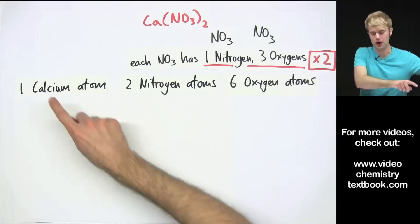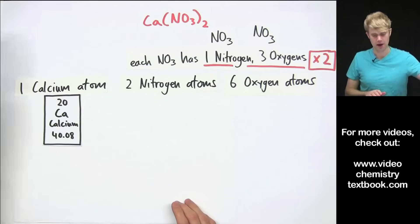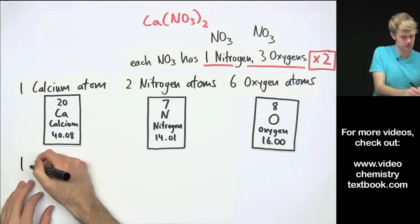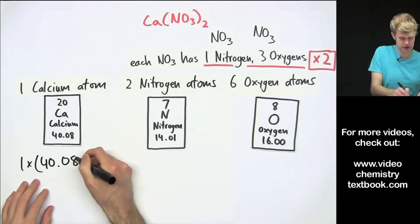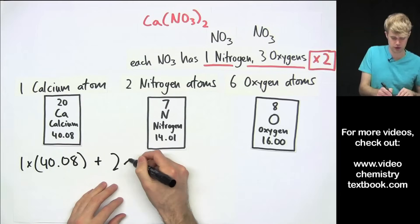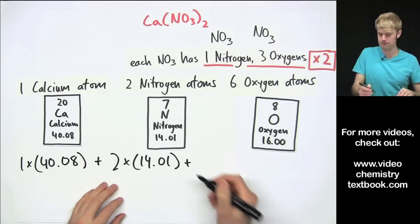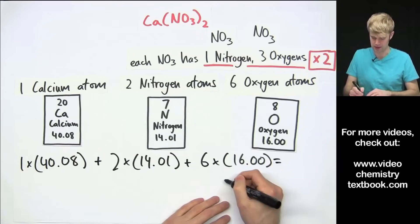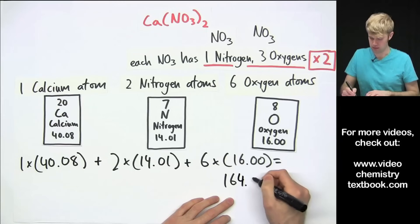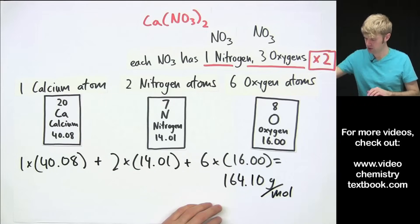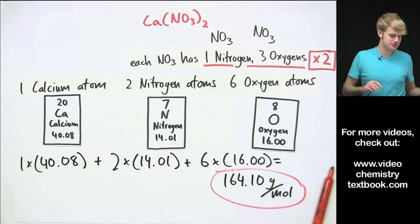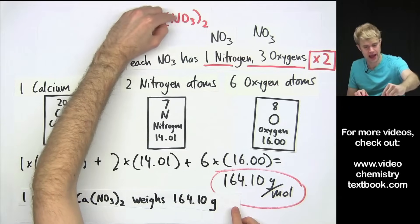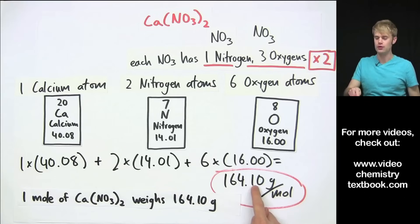We look each atom up on the periodic table to find how much it weighs. Then: one times 40.08 for calcium, plus two times 14.01 for nitrogen, plus six times 16.00 for oxygen, and we end up with 164.10 grams per mole. One mole of Ca(NO₃)₂ weighs 164.10 grams.